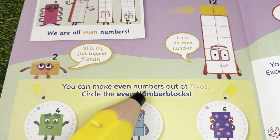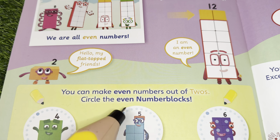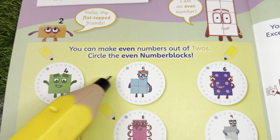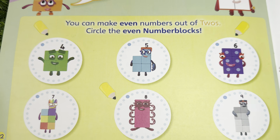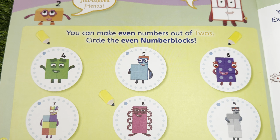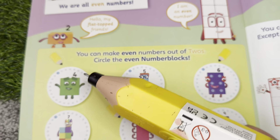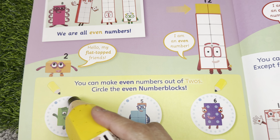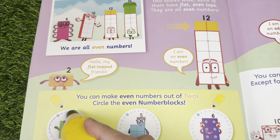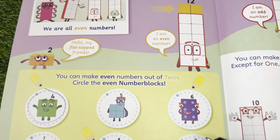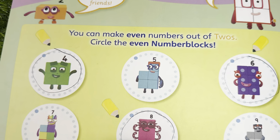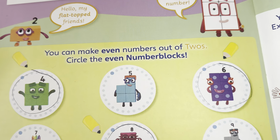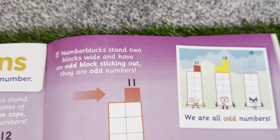Did you know you can make even numbers out of twos? Help me circle the even number blocks. Can you guess which ones they are? They are Number Blocks 4. Next is Number Blocks 6. And lastly, Number Blocks 8. These are the even numbers: 4, 6, and 8. Now let's go to another example.